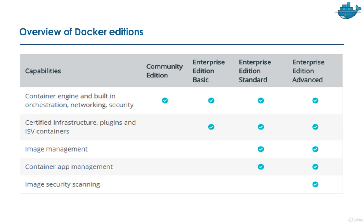In Enterprise Edition there are tiers: Basic, Standard, and Advanced. Features not available in Community Edition include certified infrastructures, plugins, ISV containers, image management, container app management, and image security scanning. These are available in Enterprise Edition Advanced, depending on which tier you opt for.